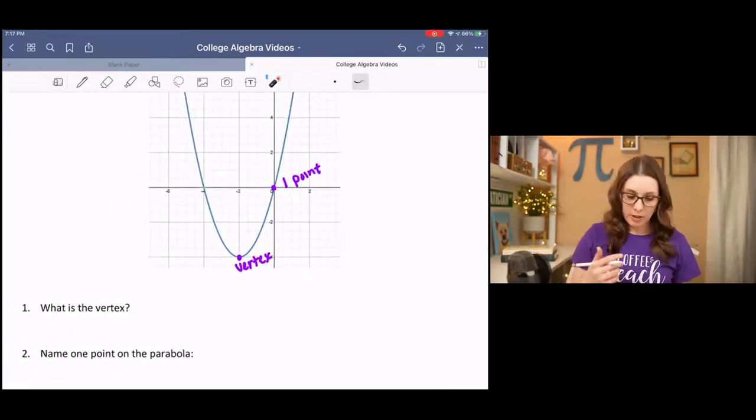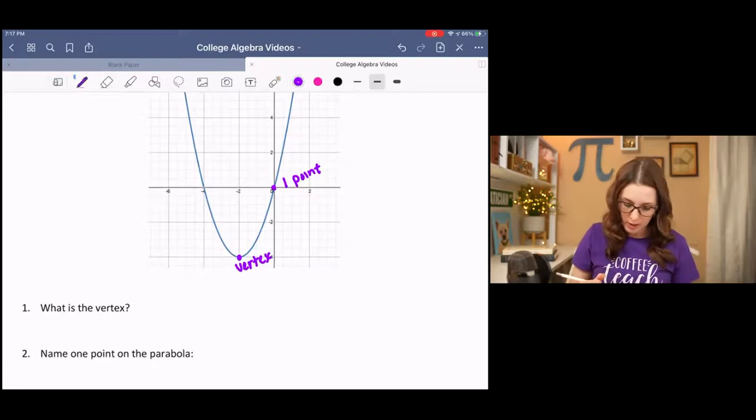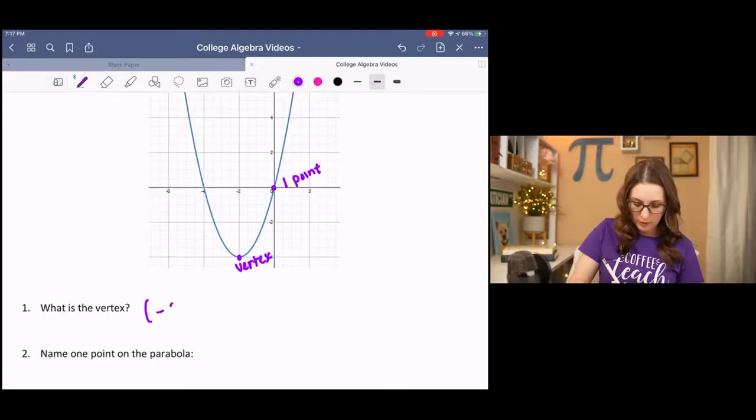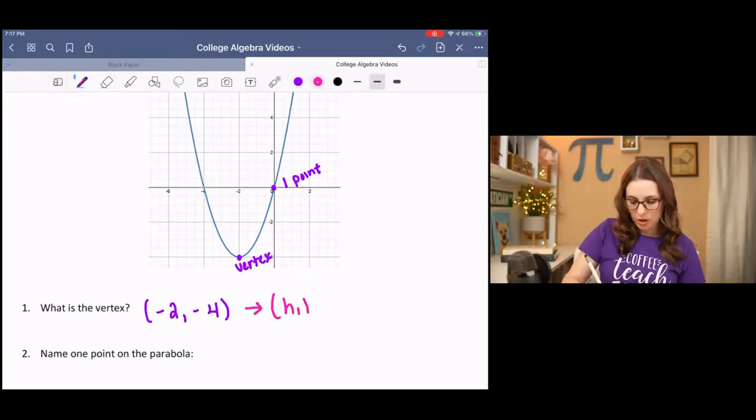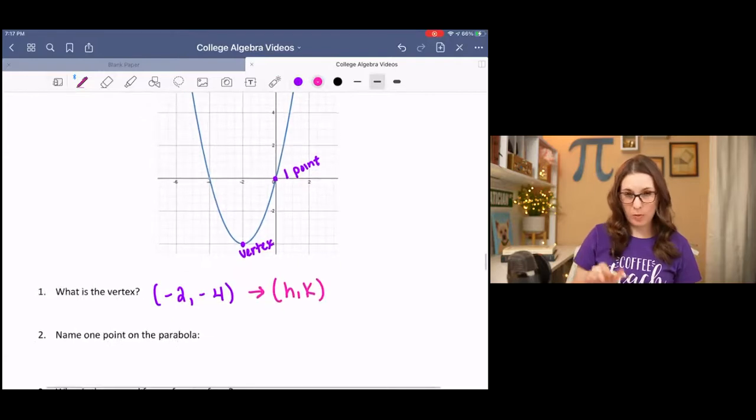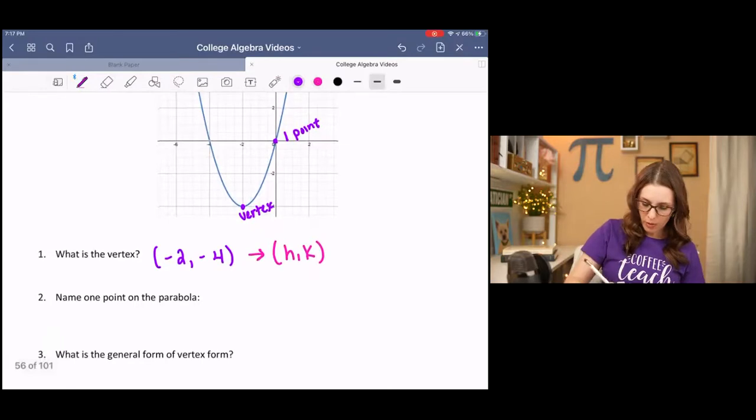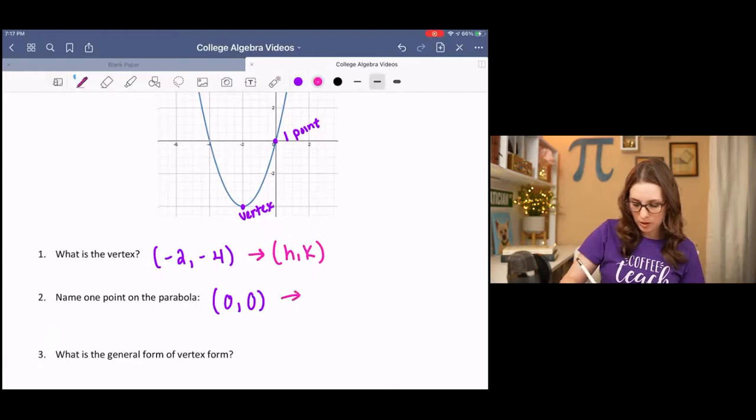So what is the vertex? It is negative 2, negative 4, which represents h, k. We'll come back to that. And then what is one point on the parabola? I picked 0, 0, which represents x, y.